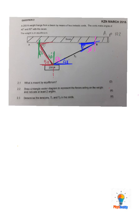So what is meant by equilibrium? Now we know that equilibrium means that the net force is equal to 0, and this is going to give us a closed vector triangle. And now they ask us to draw a triangle vector diagram to represent the forces acting on the weight, and indicate at least two angles.